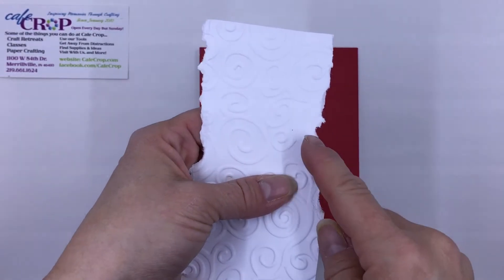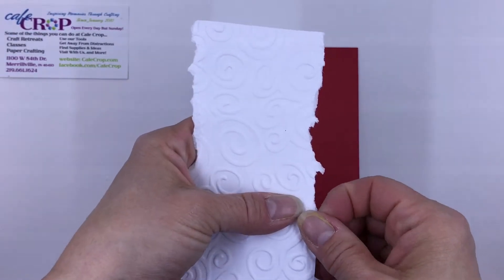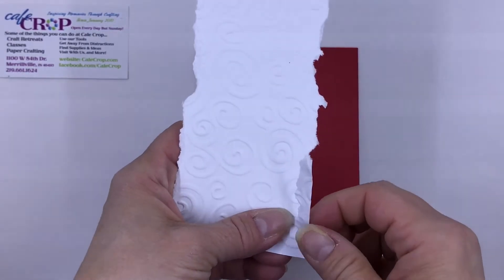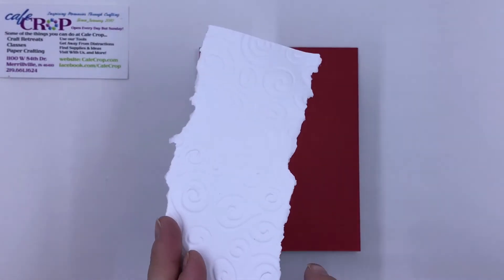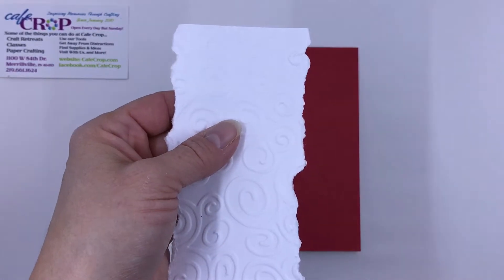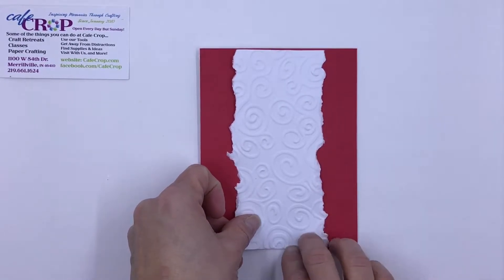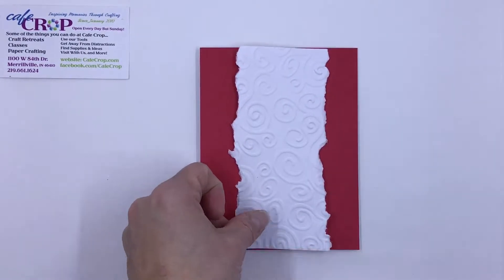Now if I tear towards myself, you're going to get more fuzziness showing on the edge versus tearing the other direction. If you tore the other direction, you're going to get a cleaner edge. So if you tear towards yourself, you're going to get that fuzziness. Now I've got this fuzzy piece to put down on here.